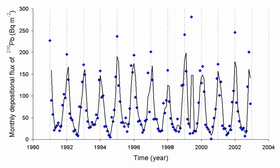Radon gas is considered a health hazard. It is often the single largest contributor to an individual's background radiation dose, but due to local differences in geology, the level of the radon gas hazard differs from location to location. Despite its short lifetime, radon gas from natural sources, such as uranium-containing minerals, can accumulate in buildings, especially, due to its high density,